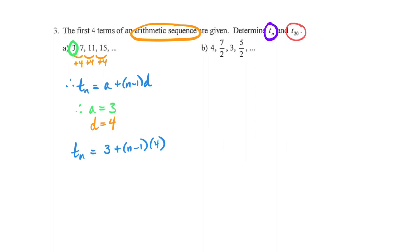I put brackets around that 4 out of habit — there will be times where I need them. Expanding the brackets gives us 3 plus 4N minus 4. Collecting like terms, we get term N equals 4N minus 1. There's our rule. If you're ever unsure, pick a term in that sequence and sub it back in to check. Term 4: replace N with 4, you get 16 minus 1 which is 15. Looking back up, term 4 is 15 — perfect, our general term is correct.